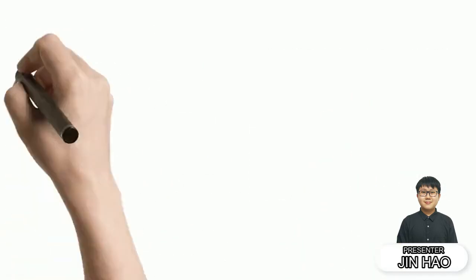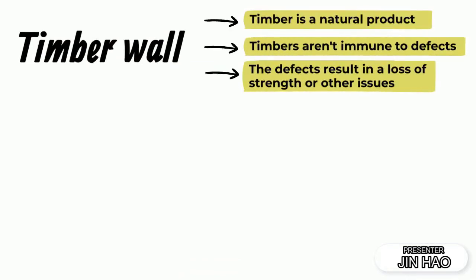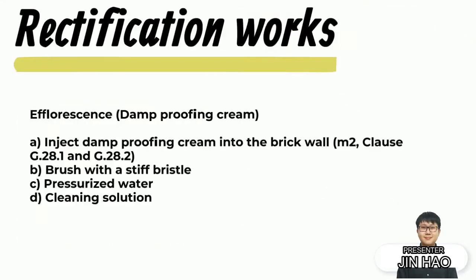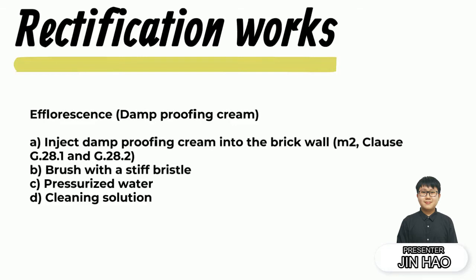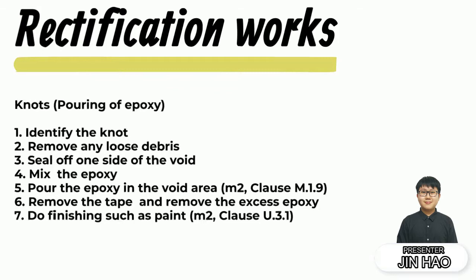Next is timber wall. Timber is a natural product and is not immune to defects, which result in the loss of strength and other issues. Knots are one of the defects generated by natural forces or compression and they weaken the strength of the wood. The rectification work for efflorescence is to inject damp-proofing cream into the brick wall and clean the efflorescence; it is measured in m² according to clauses 3.28.1 and 3.28.2. Patching with epoxy is the way to repair concrete cracking, measured in m² based on clause F.6.3. Lastly, the rectification work for knots is to pour epoxy into the void, measured in m² according to clause M.1.9, while the finishing is measured in m² based on clause U.3.1.